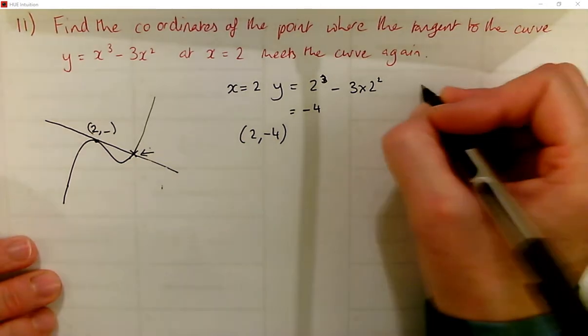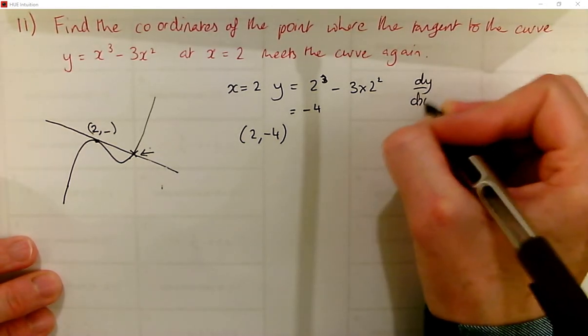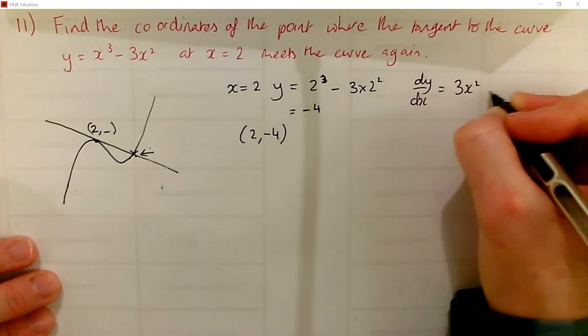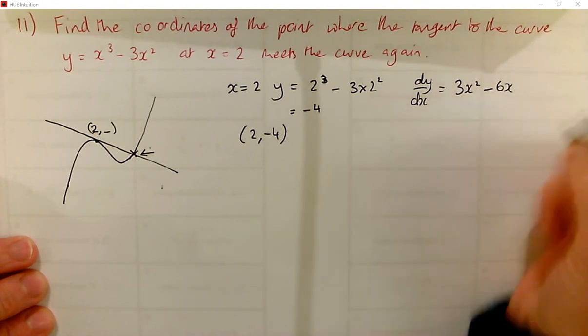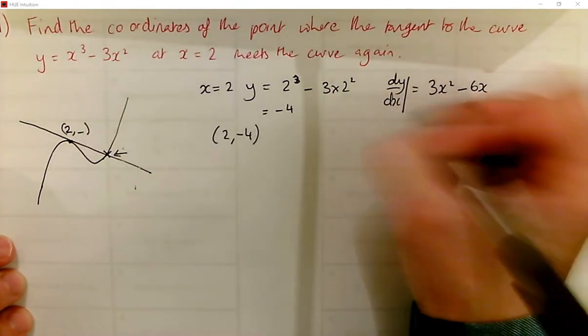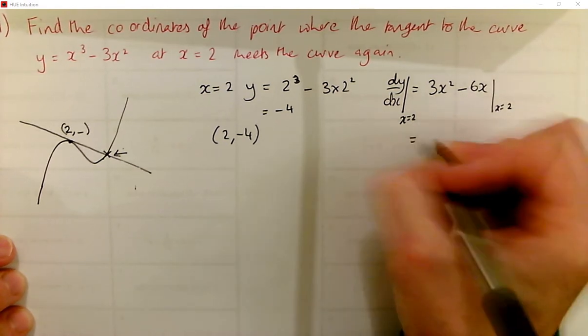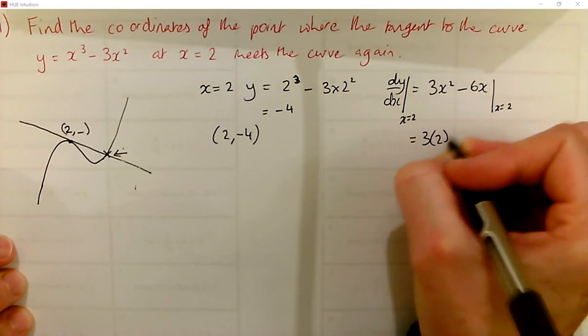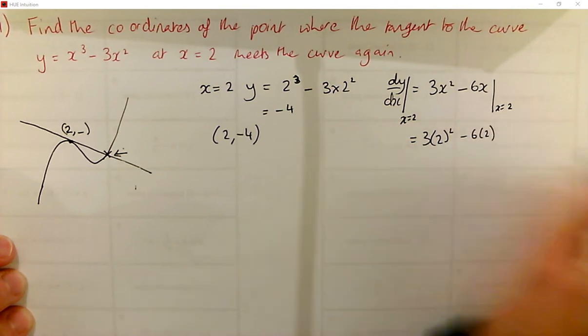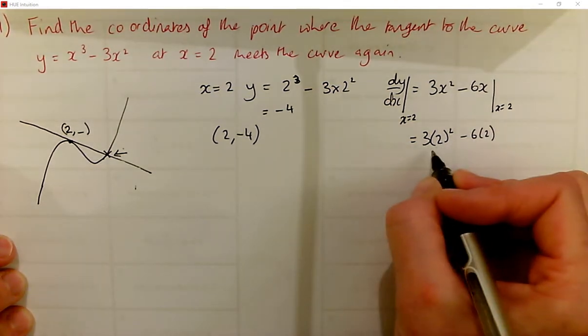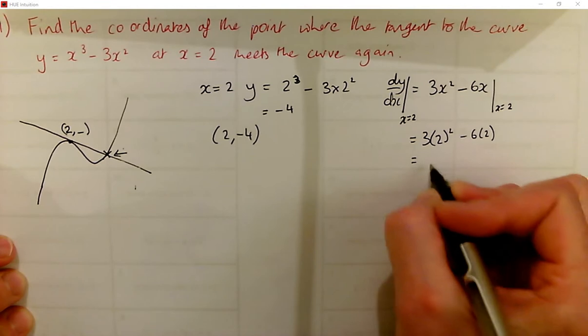And we need the gradient, so dy by dx is 3x squared minus 6x. And we need that at the point where x equals 2. So we substitute that in. So what have we got? 3 times, so we've got 12, take away 12. So that is 0.